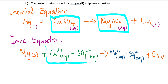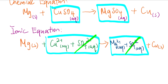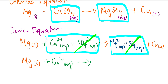Now do the same thing — look for spectator ions, those that are the same on the left and right-hand side, the same like terms. Obviously we have the sulfate ion on both sides, so I can cross it out. Then rewrite the ionic equation: Mg (s) + Cu²⁺ (aq) → Mg²⁺ (aq) + Cu (s). There you go — that's how you find the ionic equation.